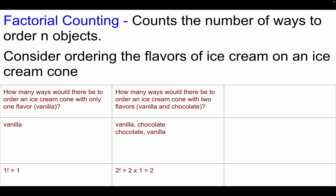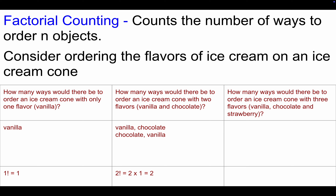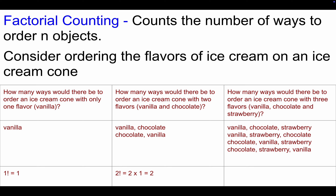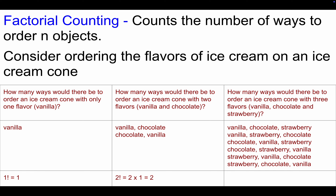Now let's think about it with three flavors: vanilla, chocolate, and strawberry. Starting with vanilla: vanilla-chocolate-strawberry or vanilla-strawberry-chocolate. Starting with chocolate: chocolate-vanilla-strawberry or chocolate-strawberry-vanilla. Starting with strawberry: strawberry-vanilla-chocolate or strawberry-chocolate-vanilla. That's 3 factorial, or 3 times 2 times 1, which equals 6. We can see that listing them out lines up with our factorial answer.